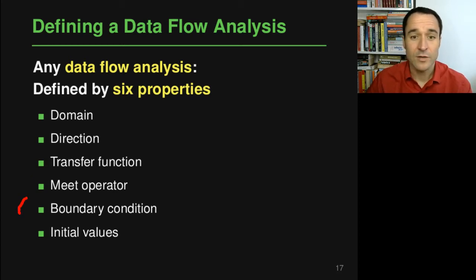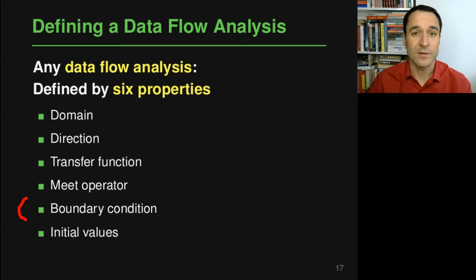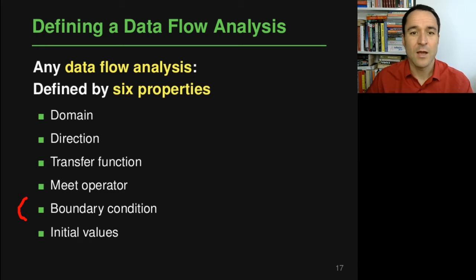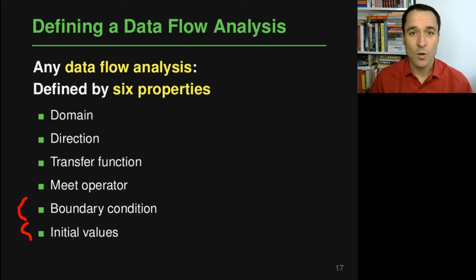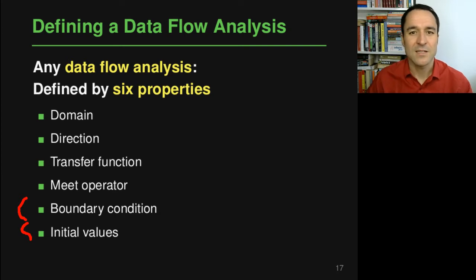You always have to define the boundary condition, which is about what happens when you do not know anything else — for example, assuming an empty set or the maximum possible set of whatever you're reasoning about. And then you also have to define the initial values, telling us what is the set of information that the analysis starts with when entering a piece of code.